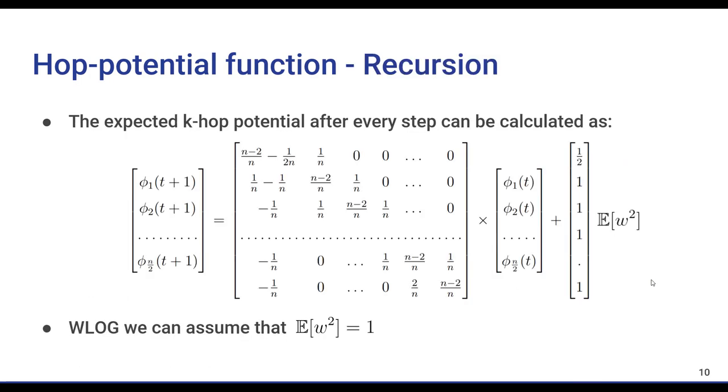Since we choose our edge uniformly at random, each edge of the cycle has a chance of 1 over n of being chosen. By averaging over what the new hop function will be after choosing each edge, we obtain the following equations.